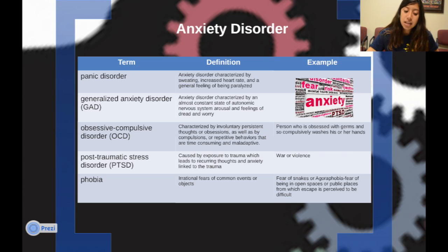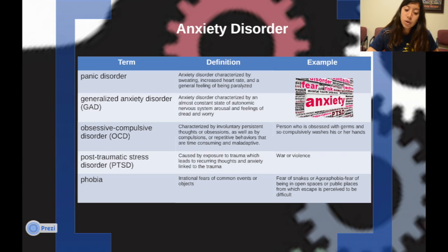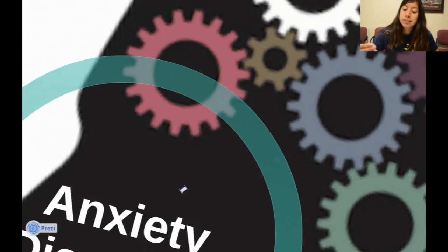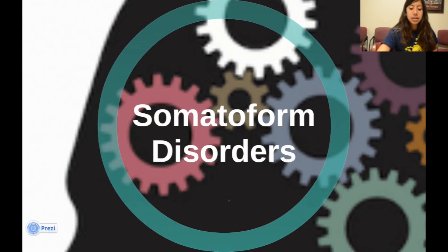Post-traumatic stress disorder, PTSD, is caused by exposure to trauma. Many veterans come back with this because they are exposed to war and violence. Another anxiety disorder is a phobia, which involves irrational fears of common events or objects — for example, fear of snakes, fear of open spaces, or even closed spaces. Keep in mind there are different types of anxiety disorders.